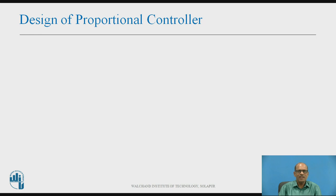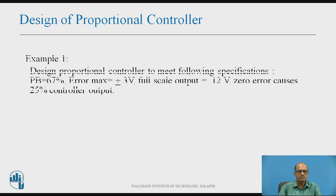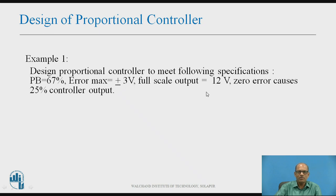Now, design of proportional controller. Let us take this example: design a proportional controller to meet the following specifications — proportional band equals 67%, error maximum plus or minus 3V, full scale output equals 12V, and zero error causes 25% controller output. This is the design task given.